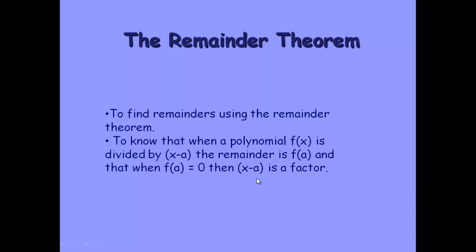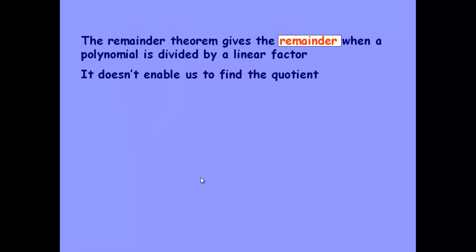So really the factor theorem is the remainder theorem when f of a is zero. It only gives us the remainder, it doesn't enable us to find the quotient, we would still need to use other methods to do so.